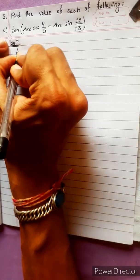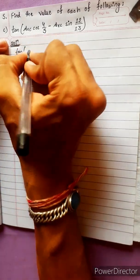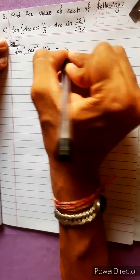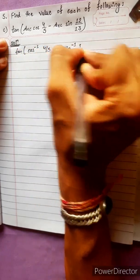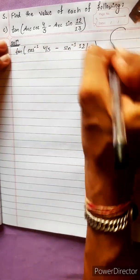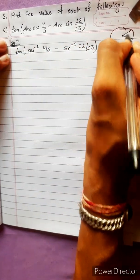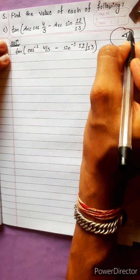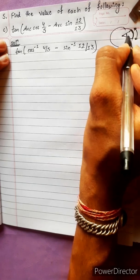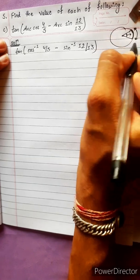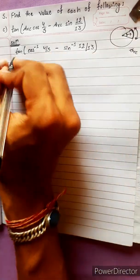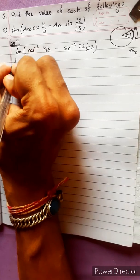Find the value of the following: tan of cos inverse. Let's understand the concept. We have an arc of 12 by 13 on a circle — the arc is always opposite the angle. So opposite of angle is arc, and cos opposite inverse. Okay, like this.